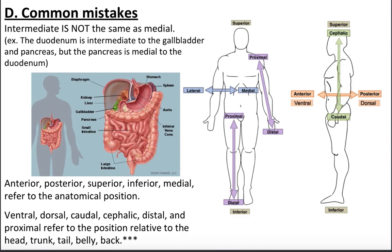Common mistakes students make with directional terms: a lot of students think medial is the same thing as intermediate, but they are not the same. Medial specifically refers to the midline — the middle line that separates your body. Intermediate means between two parts of your body, so it could be way away from the midline and still count as intermediate. For example, your ring finger is intermediate to your index and pinky because it's between them — even though it's not necessarily closer to the midline.